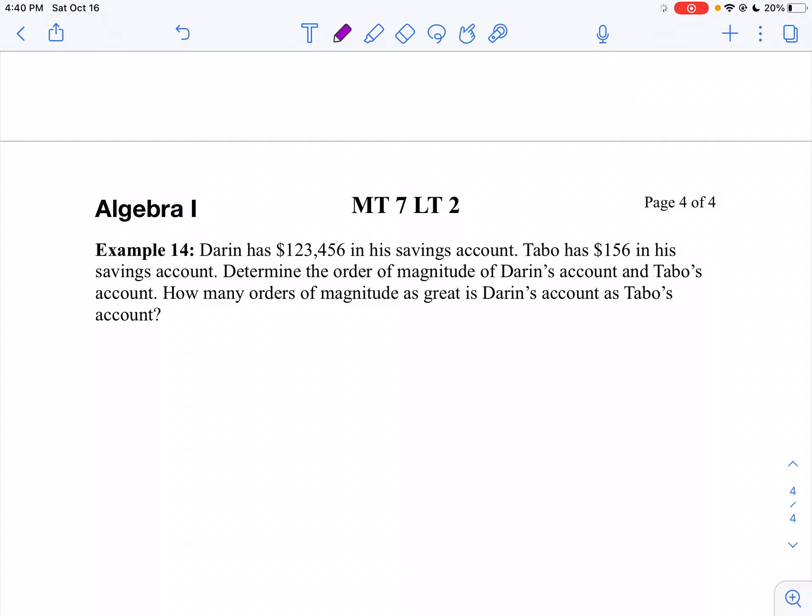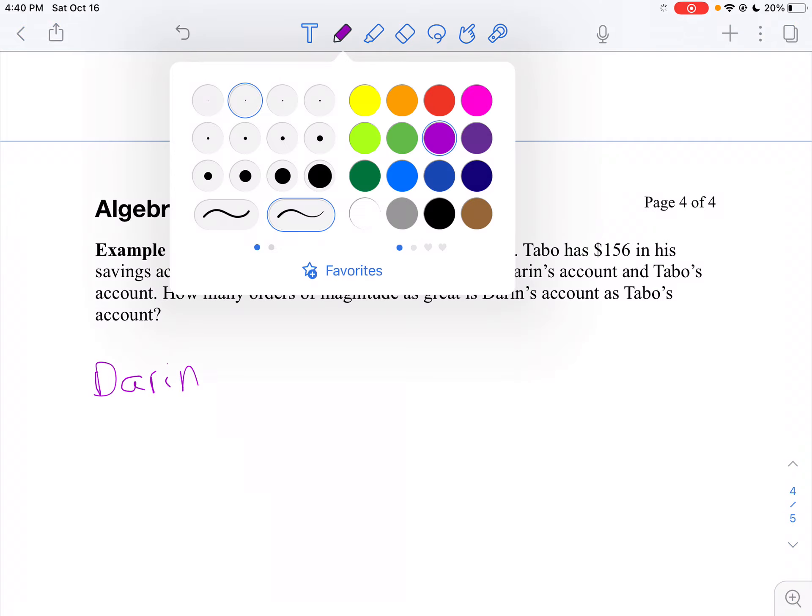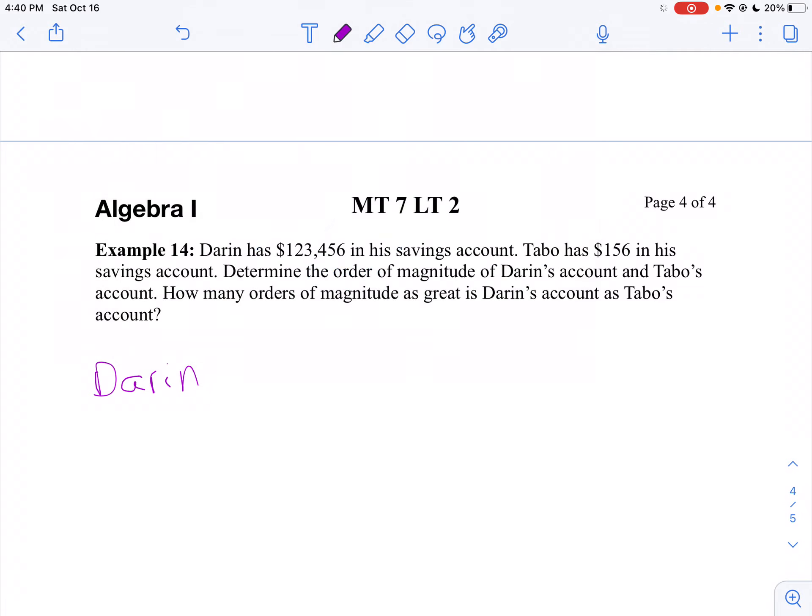So let's start here with Darren. Darren has $123,456. Well, if I round that down, that's the same thing as $100,000. If I count the zeros, there are five zeros. So Darren's order of magnitude is 10 to the 5th, or 5.